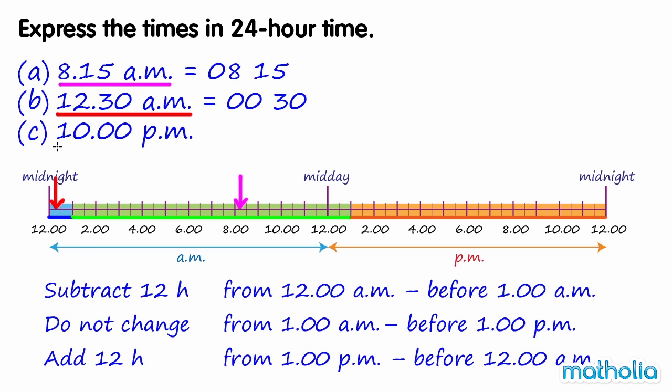10pm is located in the orange zone, so we add 12 hours to give 2200 hours.